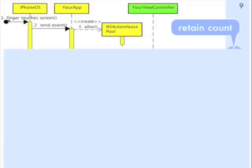When a finger touches the screen, that creates an event that the iPhone detects, and it creates an event object for that event. The operating system sends that event to your app. When the event loop gets started in your app, it creates a new instance of an NSAutoReleasePool object. This is why there's always a current default auto-release pool — because a new one gets created for every event.